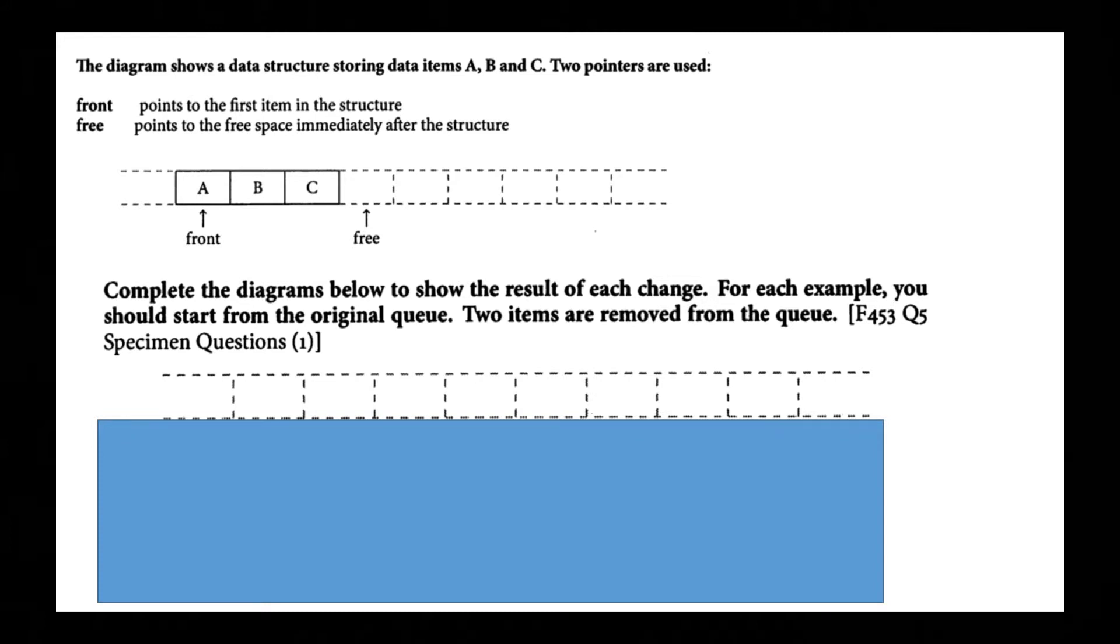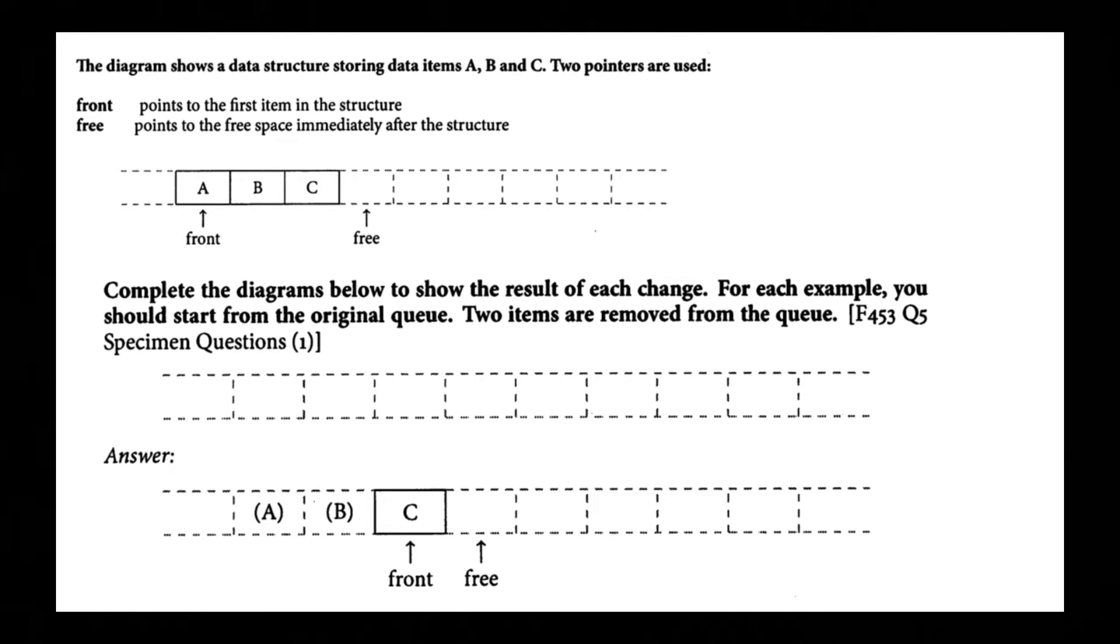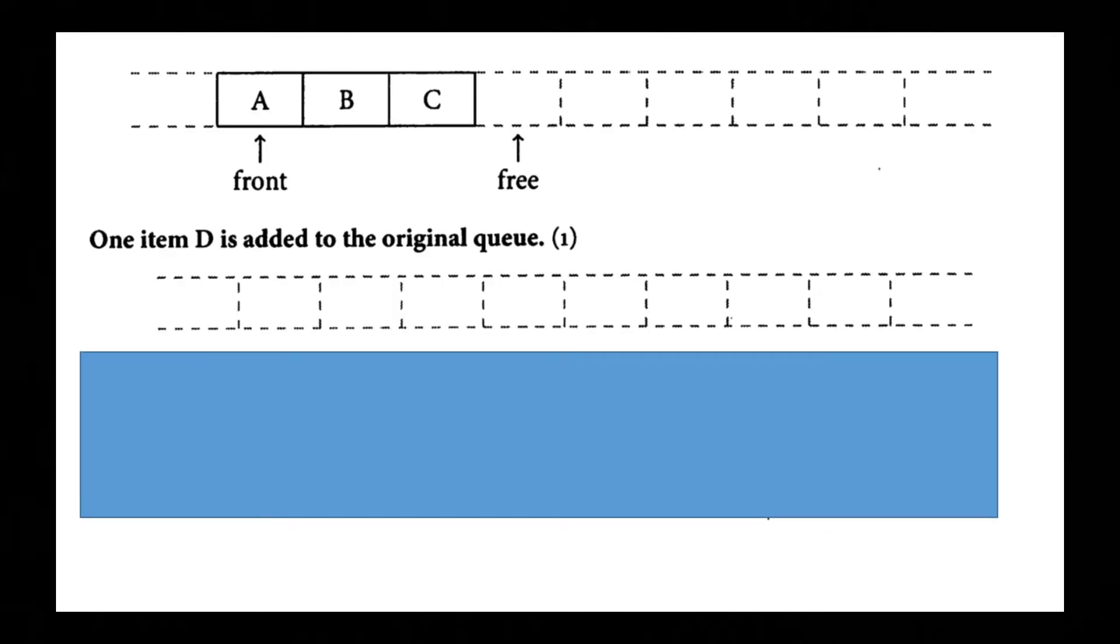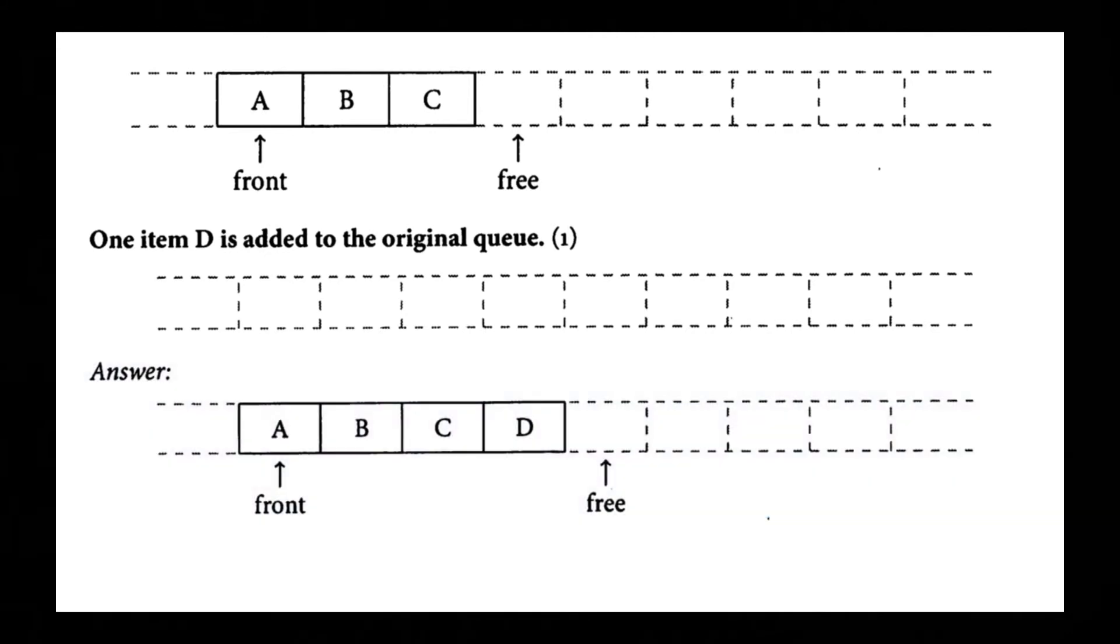The diagram shows a data structure storing data items A, B and C. Two pointers are used so this is from a previous question so complete the diagrams below to show the result of each change for example. For each example you should start from the original queue. Two items are removed from the queue. So it looks like two items A and B. So the C is now the front and the free space is next to C. One item D is added to the original queue. So it would be A is the front, B is the same, C is the same, but then D is added where that free space was and then free space is now next to D.